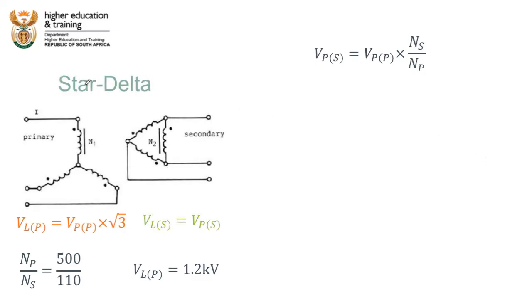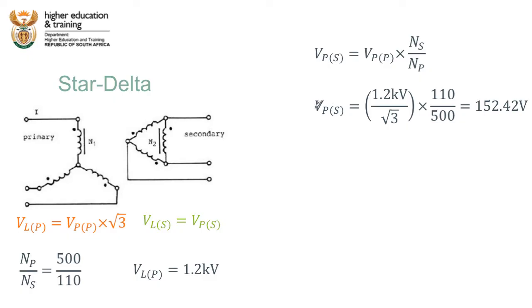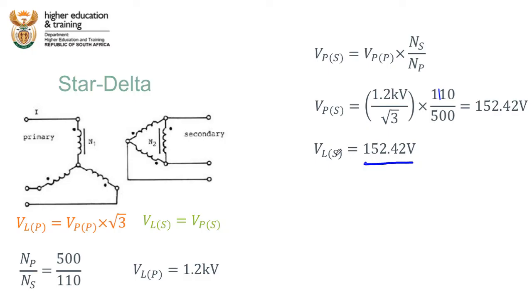For star-delta: the primary is star, so we divide the line voltage by √3 to get the primary phase voltage, then multiply by the turns ratio 110/500, giving 152.42 volts for the secondary phase voltage. Because the secondary is delta, the line voltage on the secondary equals the phase voltage — so the secondary line voltage is 152.42 volts, which is a different and lower answer than before.